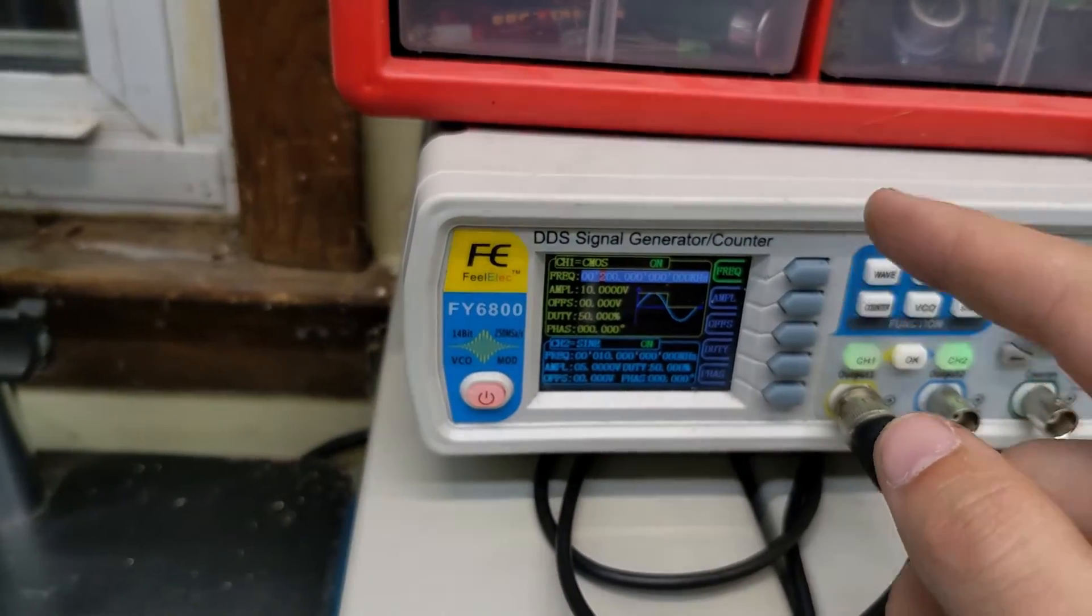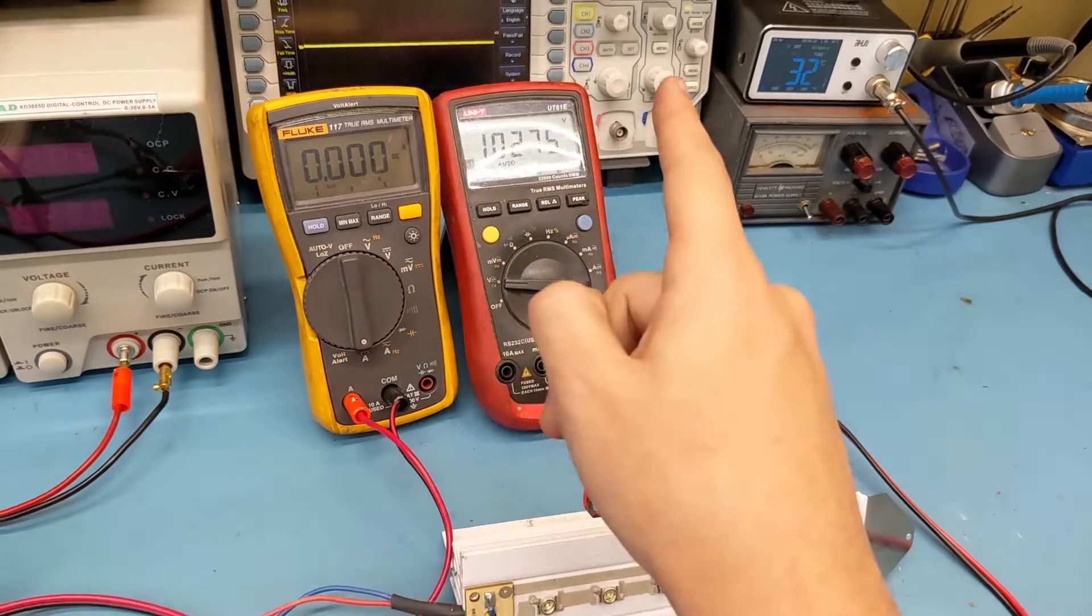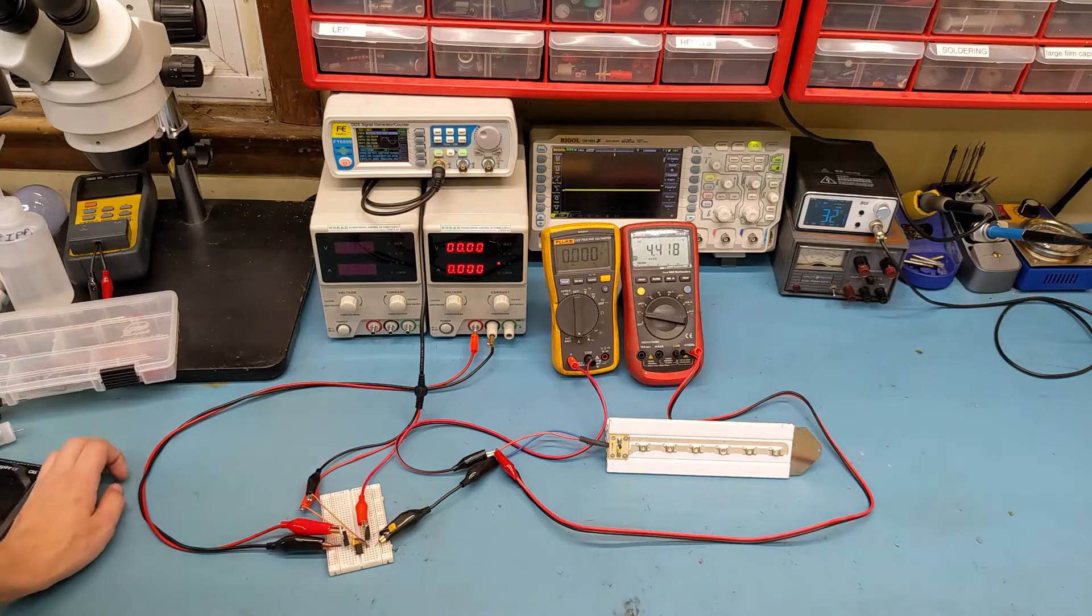And we are driving that gate driver IC at 200 kilohertz. The Fluke here is set up to measure the current through the LED string, and the UNI-T multimeter is measuring the voltage across it. Alright, so now let's go ahead and power up this circuit.